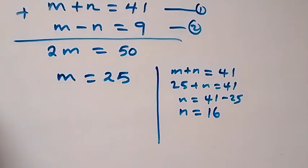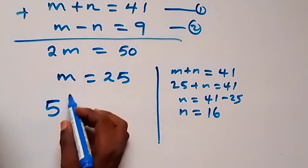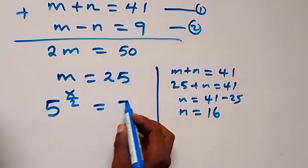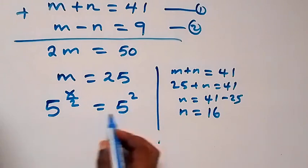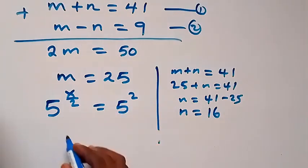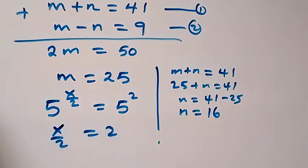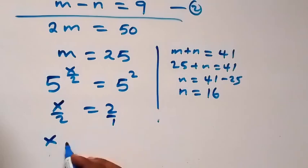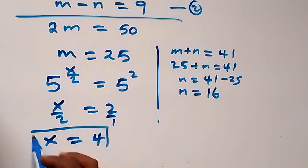Recall that m equals 5 raised to power x over 2, which equals 25. We can write 25 as 5 squared. Since the bases are the same, x over 2 equals 2. Cross-multiplying gives x equals 4.